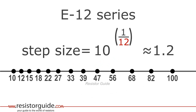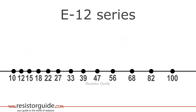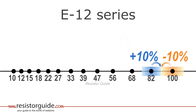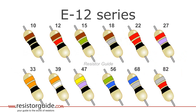When every value is 20% higher than the previous, it means that components with a tolerance of 10% just overlap each other. Therefore, the E-12 series is for components with a 10% tolerance. This is another way of illustrating the E-12 series, with the use of the electronic color code.